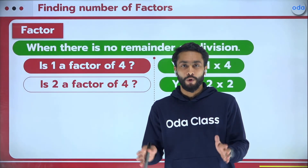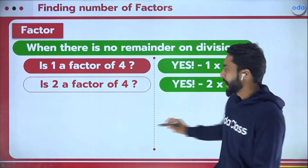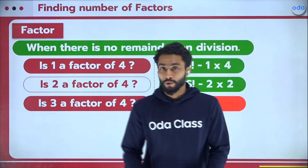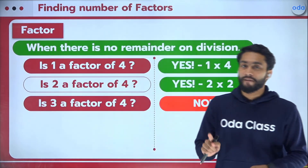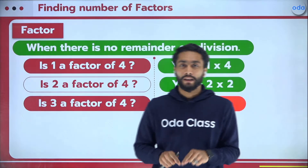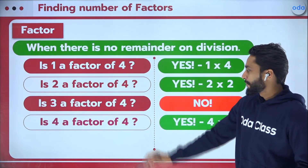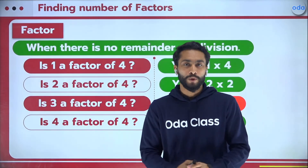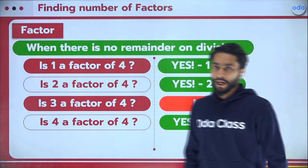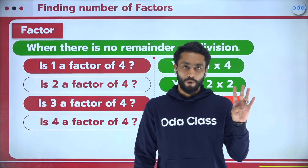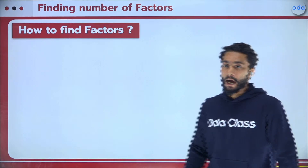Is 3 a factor of 4? In the 3-times table: 3, 6, 9, 12 — 4 does not appear, so 3 is not a factor of 4 because dividing 4 by 3 leaves remainder 1, not zero. Is 4 a factor of 4? Yes — 4 times 1 is 4. So the factors of 4 are: 1, 2, and 4.